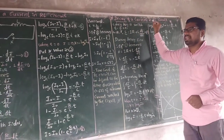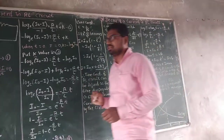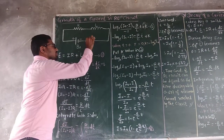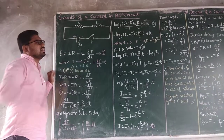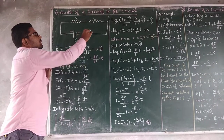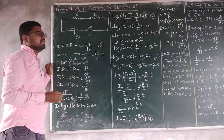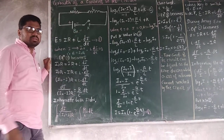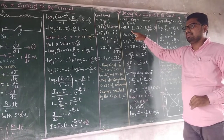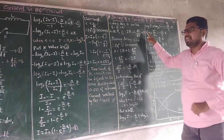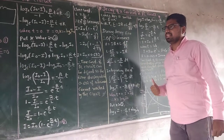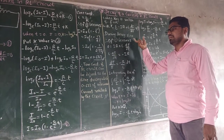Now we study the decay of current in the RL circuit. When the key is switched off, no current flows through the circuit and there is no potential difference, so EMF equals zero. During the decay process, E = 0.